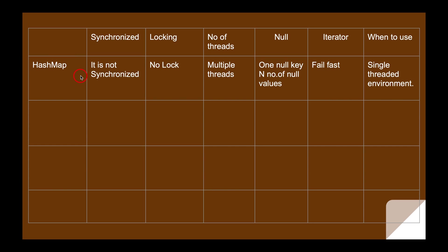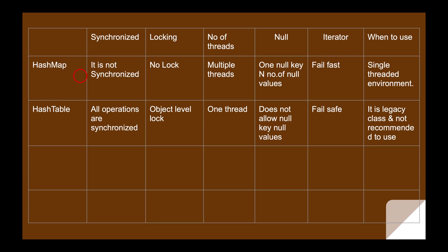HashTable is synchronized — all operations and all methods are synchronized. The lock applied is an object-level lock, meaning it locks the entire object. So only one thread is allowed to operate on the HashTable object at a time; other threads must wait in the queue until the current thread completes its task. HashTable does not allow null keys or null values.